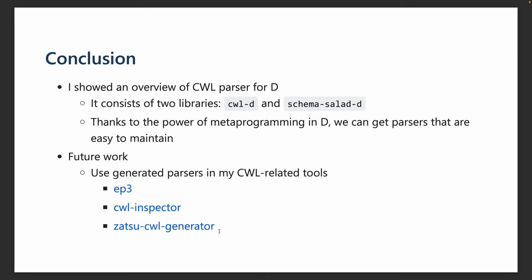In conclusion, I showed an overview of the CWL parser for D. It consists of two libraries: CWL-D and Schema-Salad-D. Thanks to the power of metaprogramming in D, we can get parsers that are easy to maintain. As future work, I have developed several CWL-related tools that currently use handwritten parsers, and I plan to replace them with CWL-D parsers. That's all — thank you for your attention.